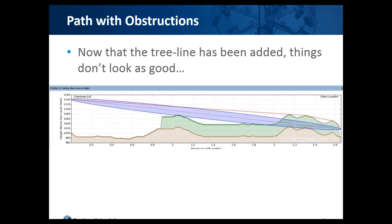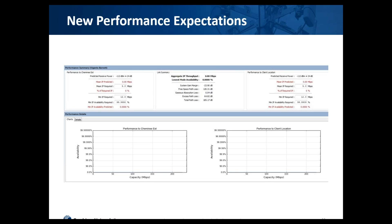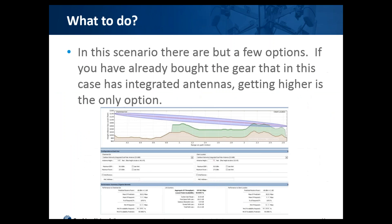When we add the tree cover to it, it's much worse than that. In this particular scenario, if the height I was given for the client location was as high as I was allowed to go, it would be pretty much game over. This shows the result based on the trees added: we have no throughput available at all, at least at 5 gigahertz on this path.